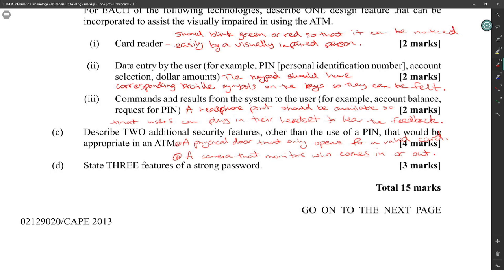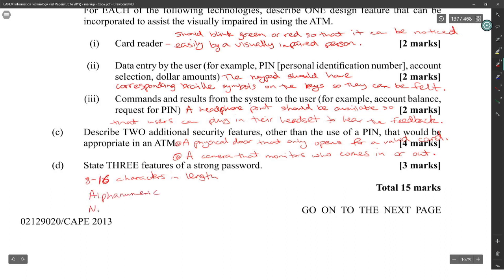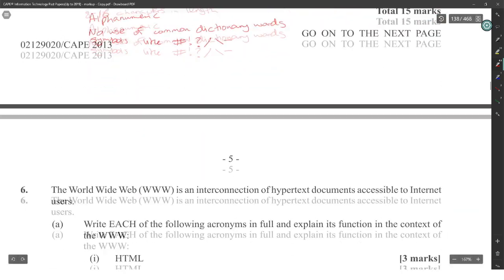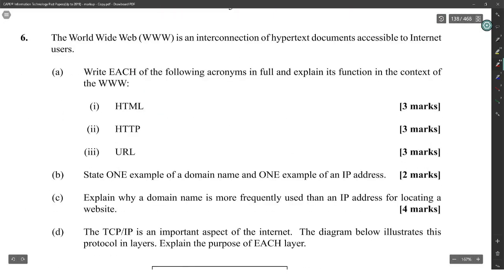State three features of a strong password: eight to sixteen characters in length; alphanumeric with no use of common dictionary words; and inclusion of symbols like hashtag, exclamation mark, question mark, forward slash, backslash, or dash.